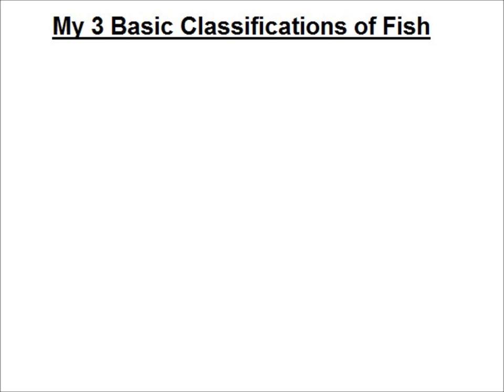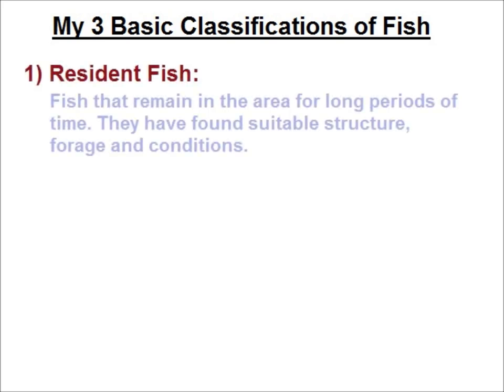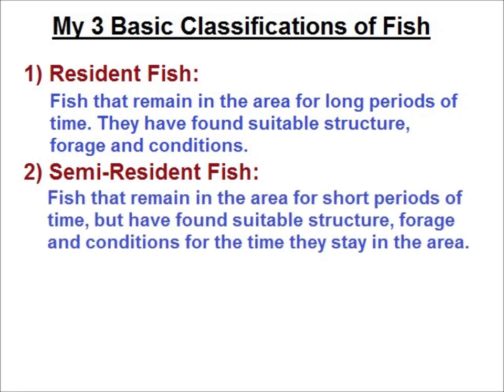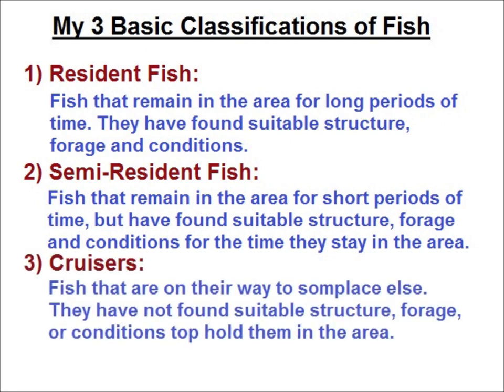Where fish are concerned, I classify them into three groups. The first group is resident fish — fish that have set up shop for long periods of time, like spring, summer, or fall. They've found structure, forage, and conditions that suit them. The second group is semi-resident fish — fish that may only stay in an area for a short period before moving on, but have found suitable temporary structure and conditions. The third group is cruisers — fish on their way to someplace else that haven't found suitable structure, forage, or conditions to hold them long enough to be considered semi-resident. In all cases, these fish are looking for edges, both literally and figuratively.